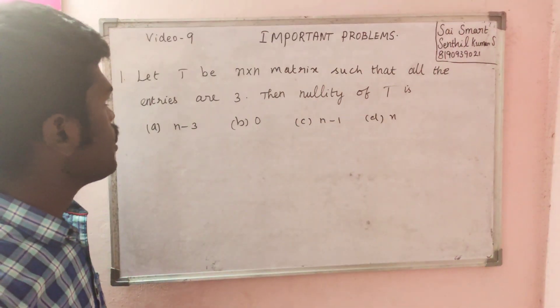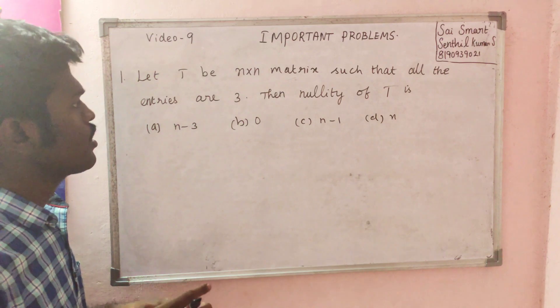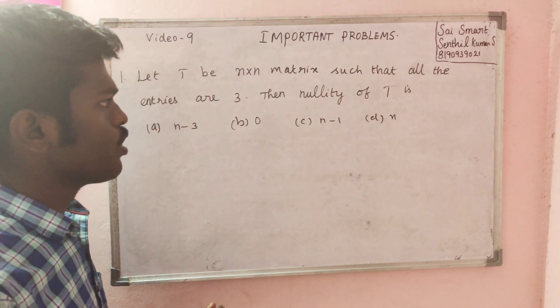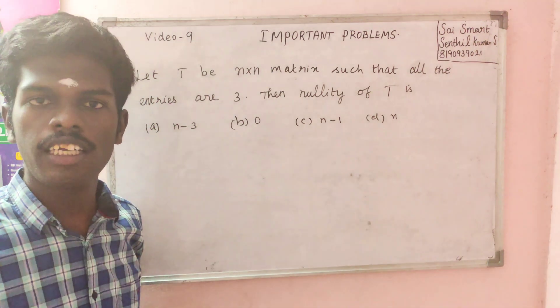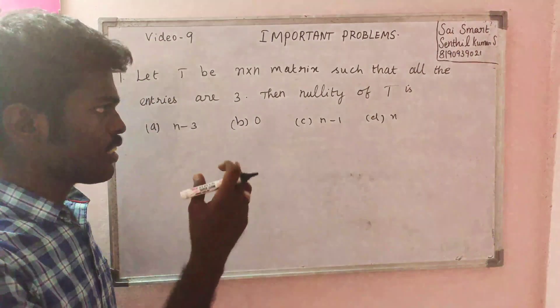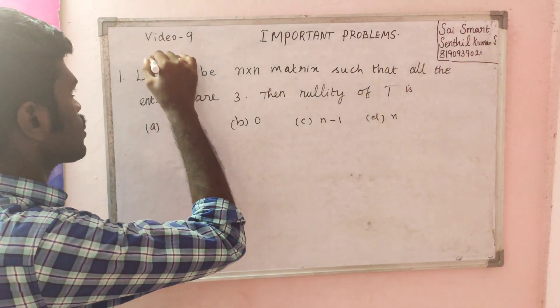We will talk about the DBI n by n matrix such that if you have the entry is L3, then LAT of T. The problem is solved with the technique. One option is neglected and it will be part B question.